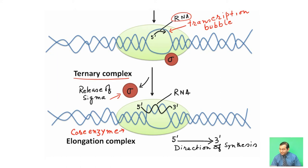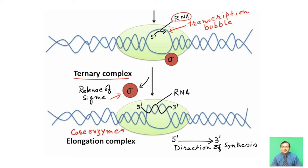The direction of synthesis is 5 prime to 3 prime. The elongation process continues by the core enzyme until it encounters the termination signal.